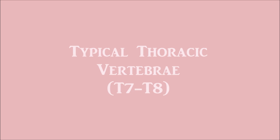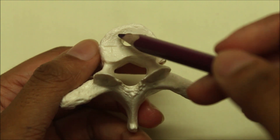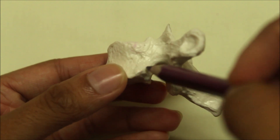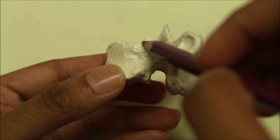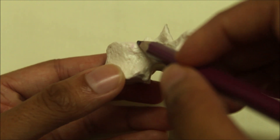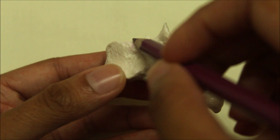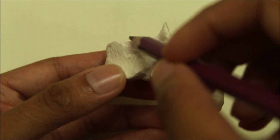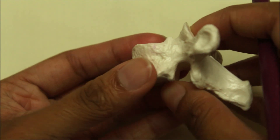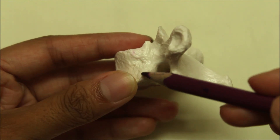Now let's look at the features of a typical thoracic vertebra. The body is heart-shaped. On each side it bears two costal demifacets: the superior costal demifacet and the inferior costal demifacet. The superior costal demifacet is larger and placed on the upper border of the body near the pedicle. It articulates with the head of the numerically corresponding rib — so for the fourth thoracic vertebra, it articulates with the fourth rib.